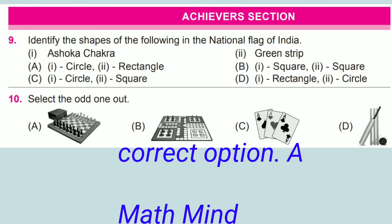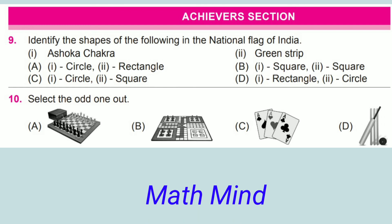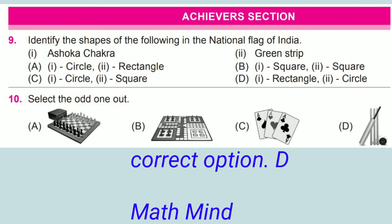Question number 10: Select the odd one out. Option A, chess; option B, Ludo; option C, cards; option D, cricket. Options A, B, and C are indoor games. Option D, cricket, is an outdoor game. Hence, option D is correct.